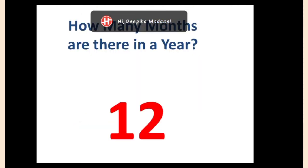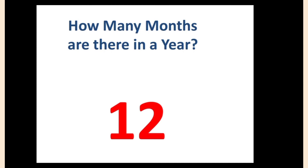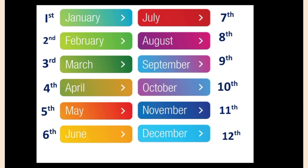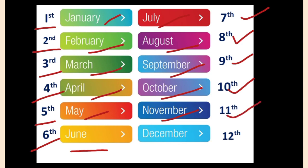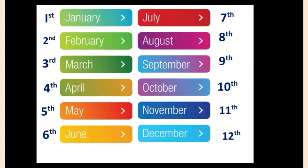Children, can you tell me how many months are there in a year? Yes, you are right. There are twelve months. Let us see which these months are. Here are the months of the year: January is the first month, February is the second month, March is the third month, April is the fourth month, May is the fifth month, June is the sixth month, July is the seventh month, August is the eighth month, September is the ninth month, October is the tenth month, November is the eleventh month, and December is the twelfth month. Do you know which month is going on? This is the sixth month, meaning June.